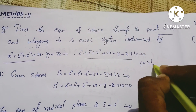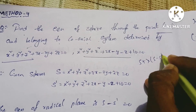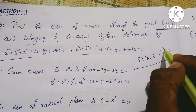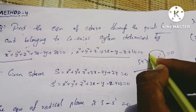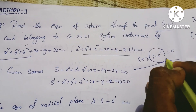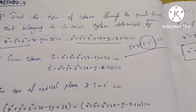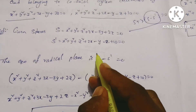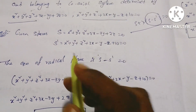The formula for the coaxial system of spheres is: S plus lambda into (S minus S dash) is equal to 0. First, S minus S dash is equal to 0, which gives the equation of the radical plane.